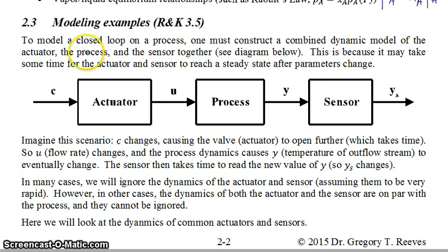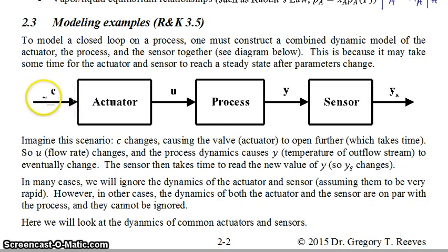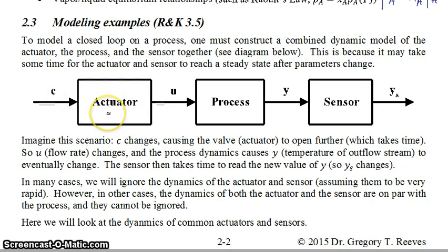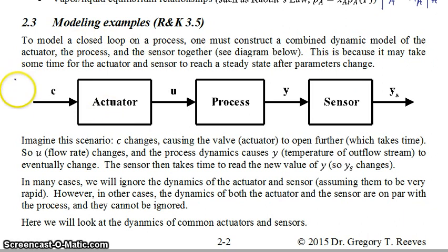In this particular example, this variable lowercase c is some sort of computer signal which tells the actuator — usually a valve — how much flow to send to the process. In many of our later examples, this lowercase c will also be represented by the variable f_spec, or the specified flow rate.